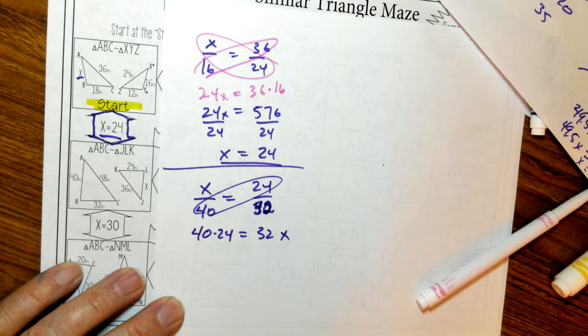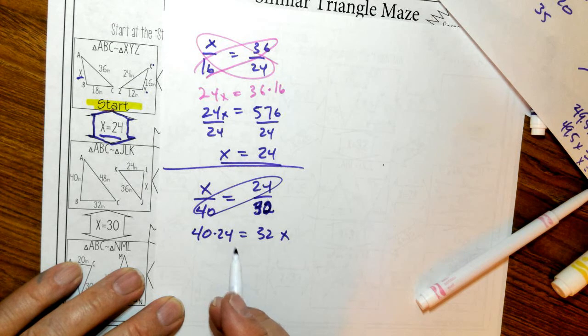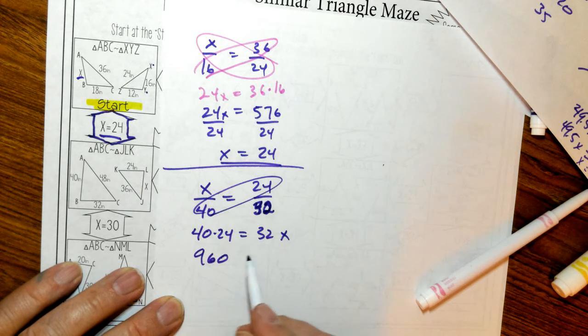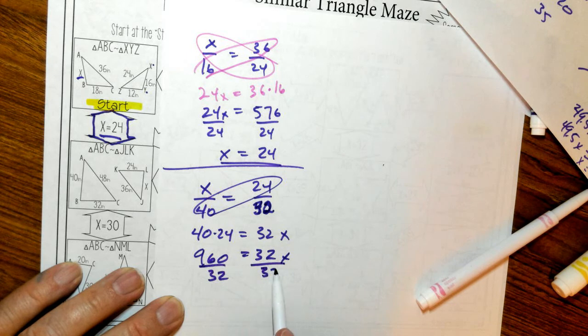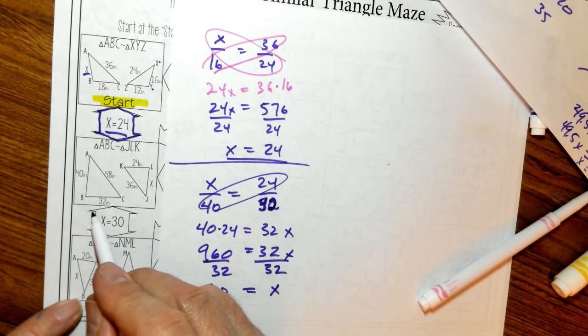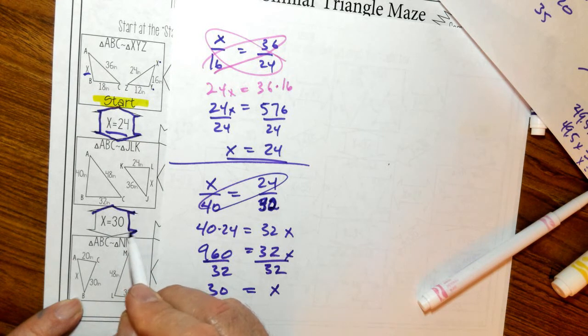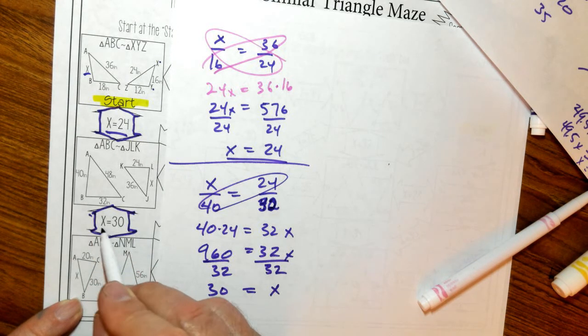40 times 24, that's 960. And now I divide that by 32 both sides. And I get X equals 30. So I'm going to go down here. This is where my answer is. So this is my next one right here.